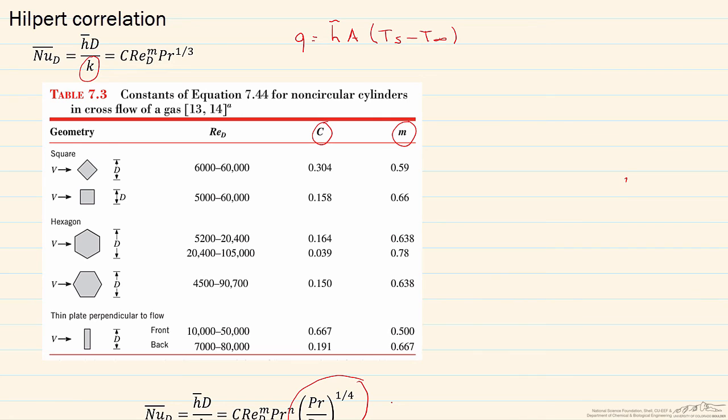It can also be used for non-circular cylinders. And what we do is here, we look up the properties at the film temperature, which is equal to the surface temperature plus the bulk temperature divided by 2. And these temperatures need to be in Kelvin.